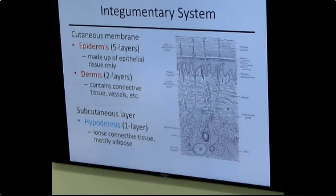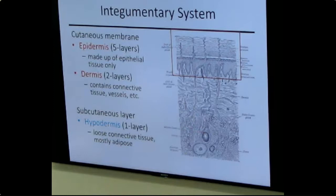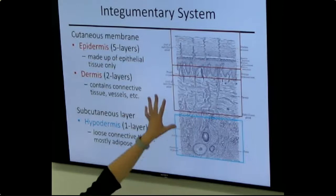If you claw yourself enough to draw blood, you've penetrated the epidermis and entered the dermis proper, where blood vessels are. Below the skin we have the hypodermis, also known as the subcutaneous layer. The epidermis is on the upper portion, the dermis is right under it, and way down is the hypodermis. The dense irregular connective tissue is really in that middle dermis area.